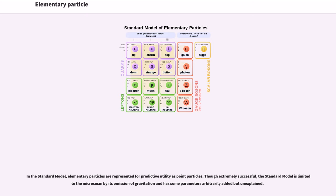In the standard model, elementary particles are represented for predictive utility as point particles. Though extremely successful, the standard model is limited to the microcosm by its omission of gravitation and has some parameters arbitrarily added but unexplained.